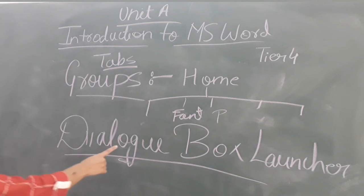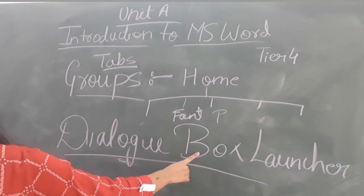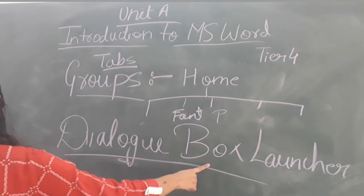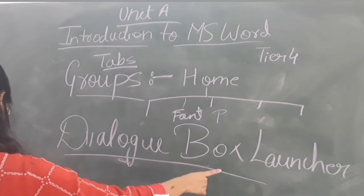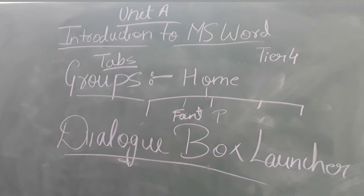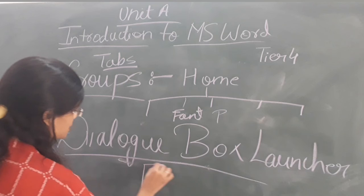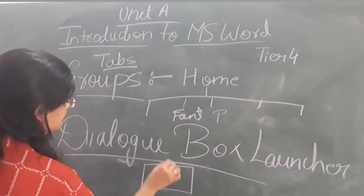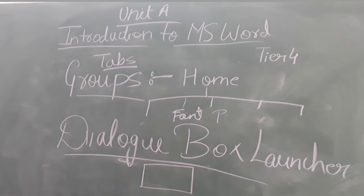Now the next is Dialog Box Launcher. Dialog Box Launcher is also known as Task Pane. And these Dialog Box Launcher helps in opening a Dialog Box. I mean, whichever Dialog Box you want to open, you can just click on this Dialog Box Launcher of that option and the Dialog Box will be open.